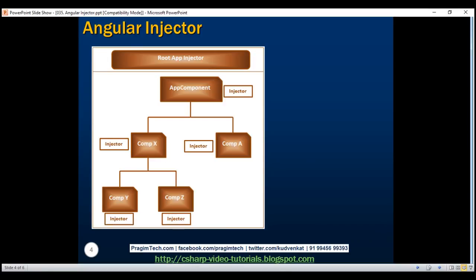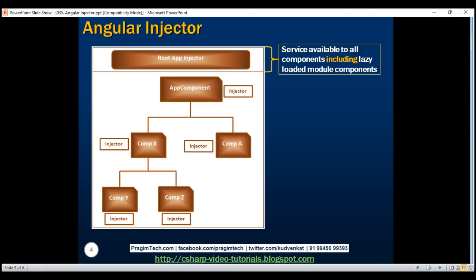For these injectors to be able to inject an instance of a service dependency, we will have to first register our service with these injectors. The availability of the service for injection depends on which injector you have registered your service with. For example, if we register our service with the root app injector, then that service is available for injection into all components across our entire application, including the lazy loaded module components.